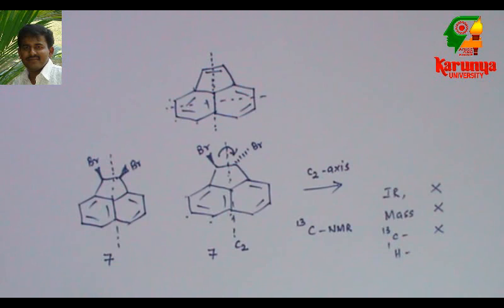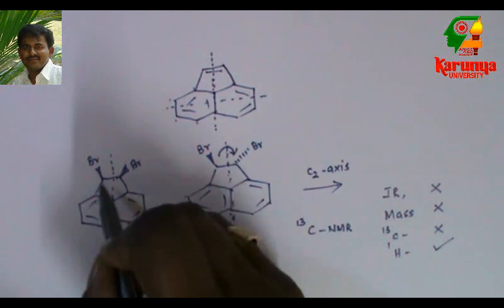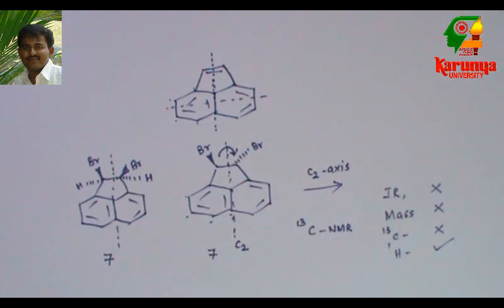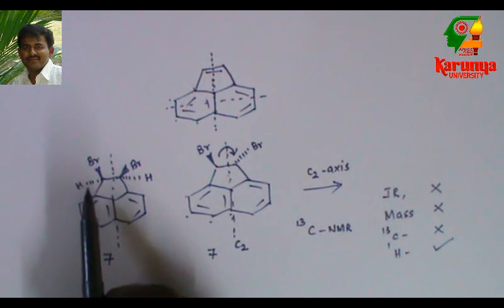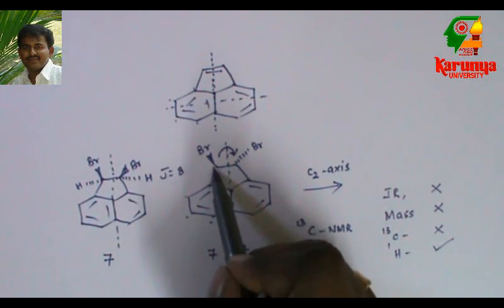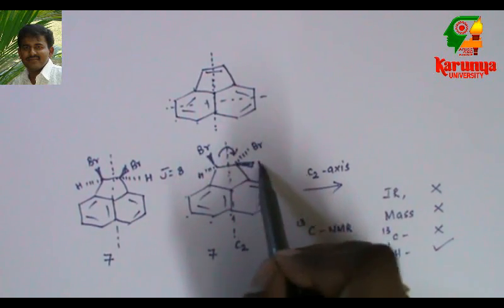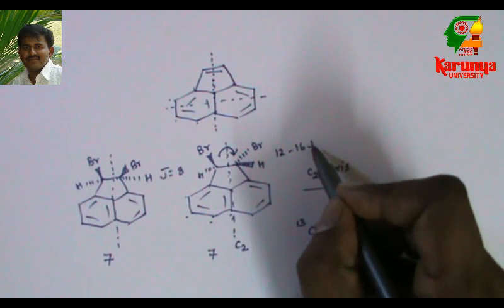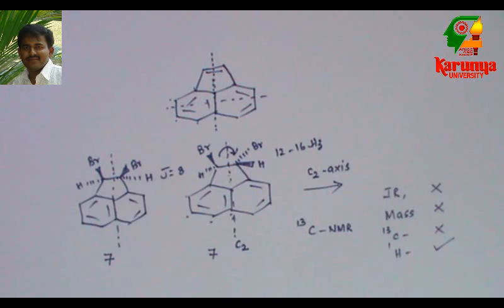What about proton NMR? Using proton NMR, you can see whether they are cis or trans. Here we have hydrogen. This hydrogen may appear around 3 to 4. And since they are cis, the coupling constant J value will be around 8. But in this case, the two hydrogens, they are trans. The coupling constant will be between 12 to 16. Hence, based on that, we can find out whether the isomer is cis or trans.